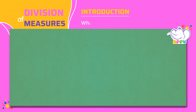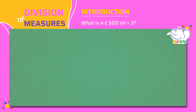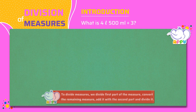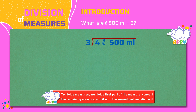What is 4 liters 500 milliliters divided by 3? We write the division bracket and write 3 outside the bracket and 4 liters 500 milliliters inside the bracket.